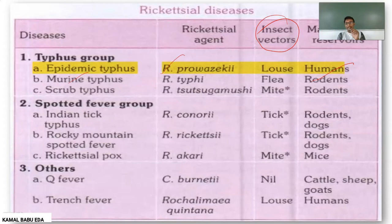The third type is Scrub Typhus, which is mainly caused by Rickettsia tsutsugamushi. The insect vector is mite and the mammalian reservoirs are rodents. The next group is the Spotted Fever group.